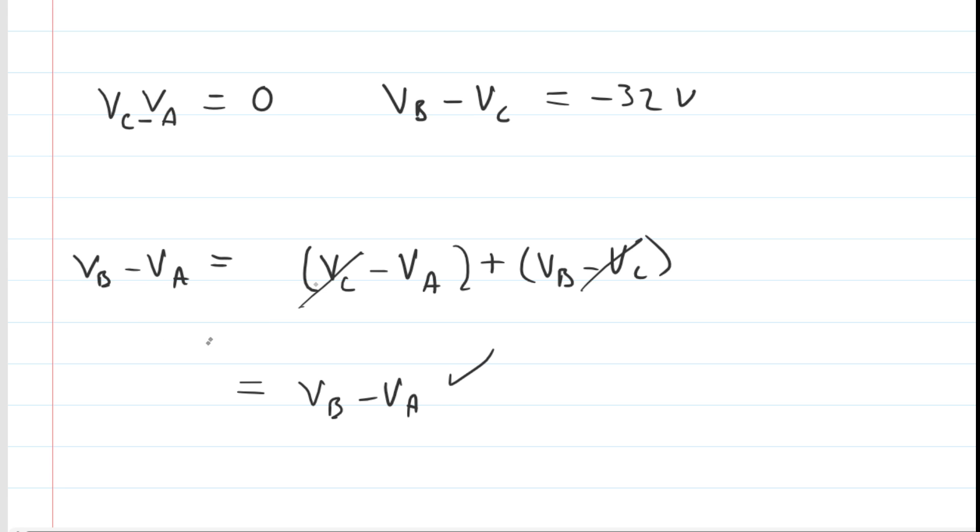So V_C minus V_A, let me clean this up a little bit, we said was zero volts, and then V_B minus V_C was negative 32 volts. Yes, our final answer is negative 32 volts. That is the potential difference between points A and B.